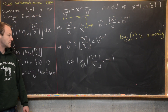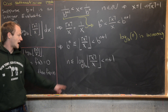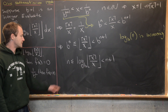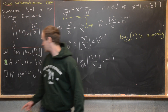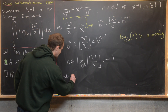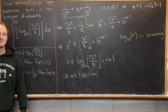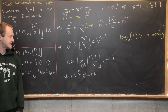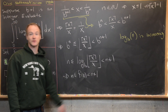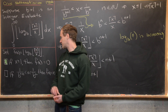Since the log base b is between these two natural numbers, applying the floor to it pushes down to the lower natural number, which defines f of x. So we get n is less than or equal to f of x, which is strictly less than n plus one. Since f of x only takes on integer values, and there's no integer between n and n plus one, f of x must equal n — which is what we wanted to show.